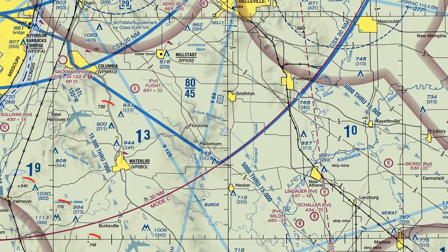The black dots, known as spot elevations, show the high points along a ridge or range, and you will notice next to each black dot a number showing the elevation in feet MSL.